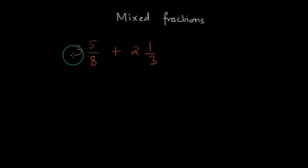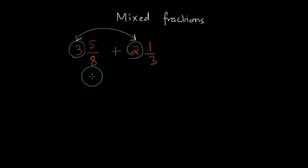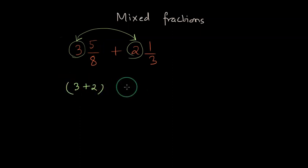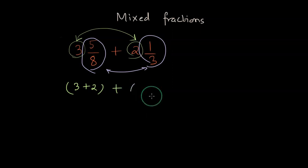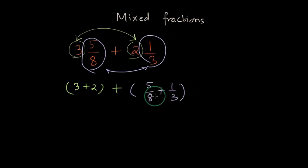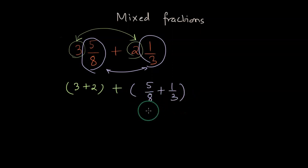A very simple way to do that is to combine the whole part first. Once you decide to combine the whole part, write it separately, then put another plus sign and add the fraction parts together. Because you cannot directly add these fractions since the denominators are not equal, you will have to make the denominators equal.